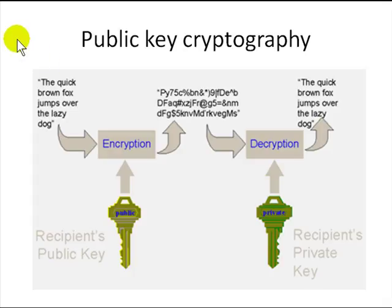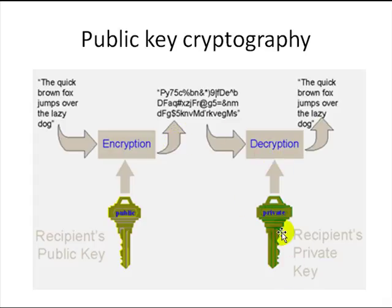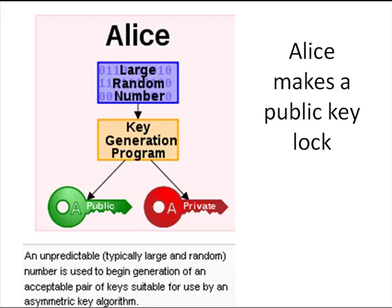Here's an example from Wikipedia on public key cryptography. The recipient's public key, which is published and known to everyone, is used to lock the data, and then it goes over the network to the recipient. The recipient uses their private key to open the data. A user like Alice takes a large random number and a key generation program and generates a key pair.